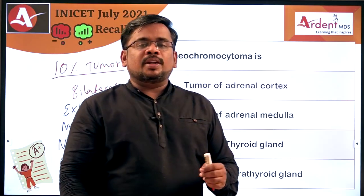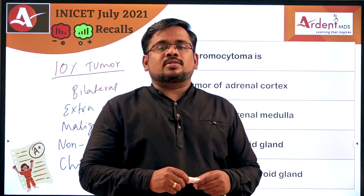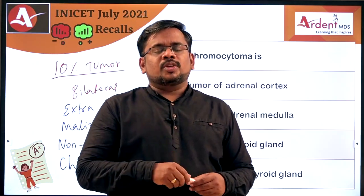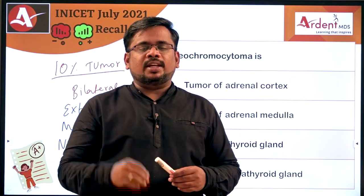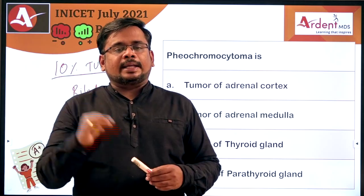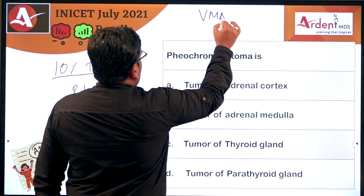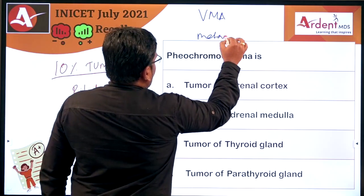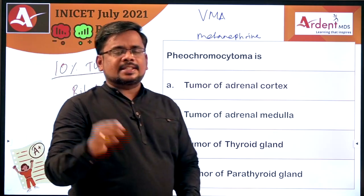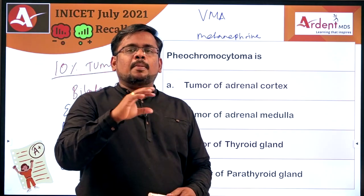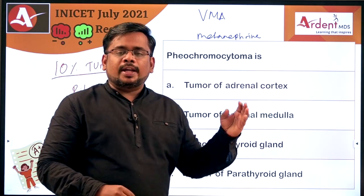To identify whether a patient has pheochromocytoma, you measure vanillylmandelic acid (VMA) and metanephrines. VMA is vanillylmandelic acid, and metanephrines are byproducts of epinephrine, which are useful for identification of the tumor of the adrenal medulla — pheochromocytoma.